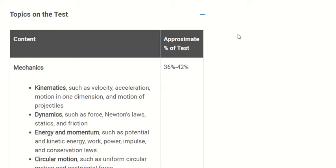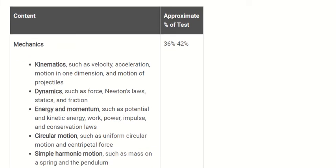These are the topics and the approximate percentage that will come in a SAT subject physics test. The first content area is mechanics. The approximate percentage of mechanics in a SAT physics test will be 36 to 42%.